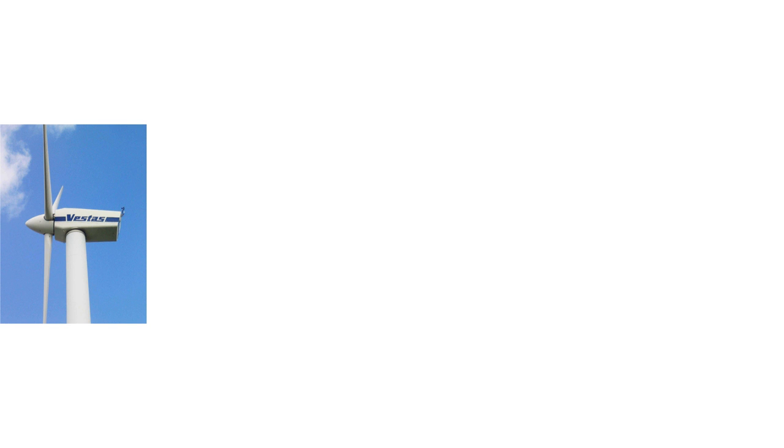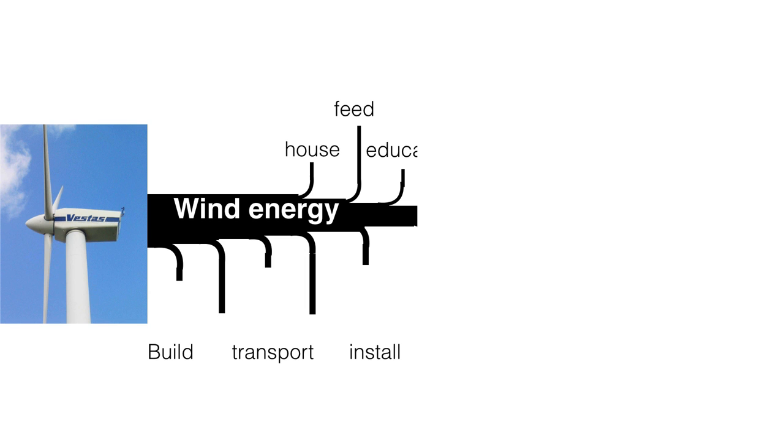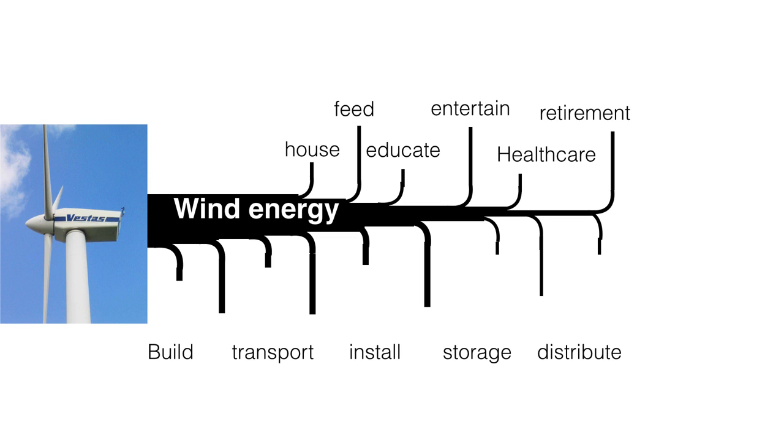If the energy produced by a wind turbine is used to build, transport, and install them, create energy storage units for no wind periods, create the distribution grid including the required roads and bridges, and in the long run, repair and replace everything listed above, then, wind turbines might not deliver energy above that needed to keep themselves running.